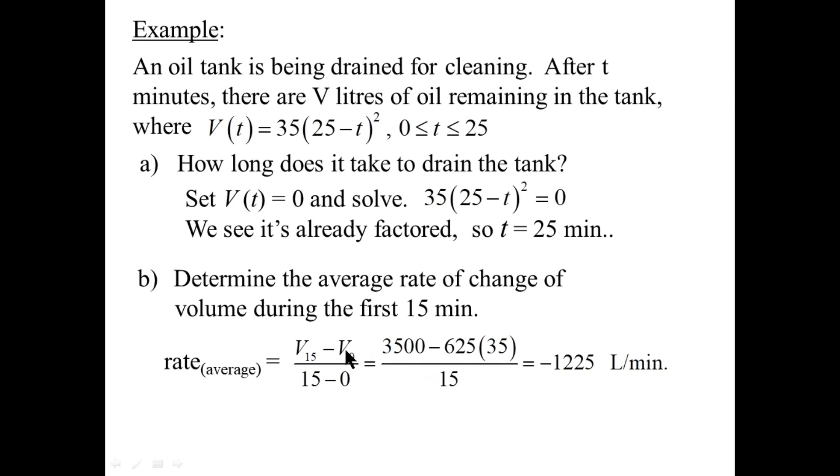And again, mentally, V of 0. Put a 0 in here for t. 25 squared is 625 times 35. And the 15 minus 0 is 15. Use a calculator for this. And we have our rate. So this tank is draining out at 1225 liters per minute, on average, over the first 15 minutes.